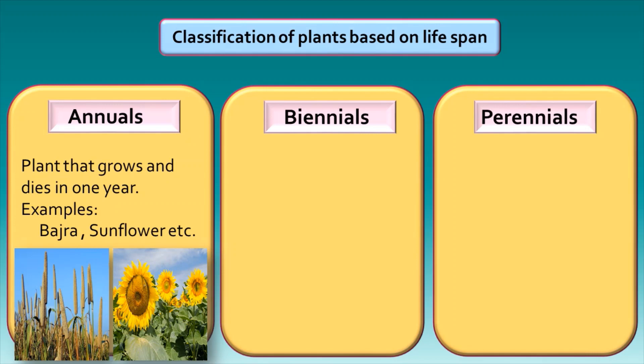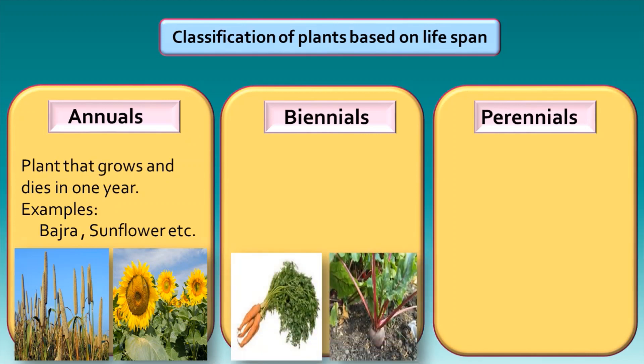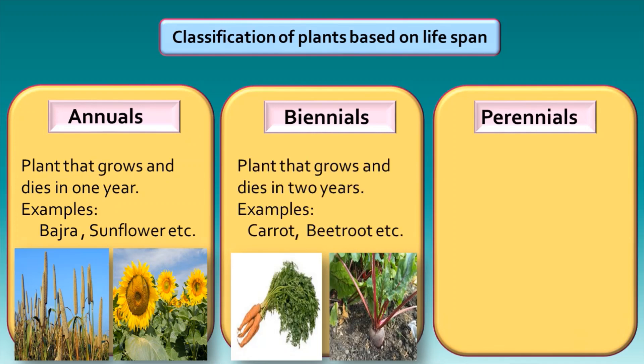Biennials: plants like carrot and beetroot have a life cycle of two years. That means they grow and die in two years. During the first season, the plant prepares and stores food, and in the second season, it bears flowers, fruits, and seeds.